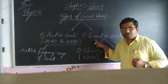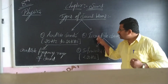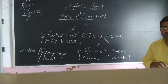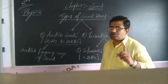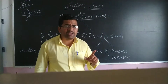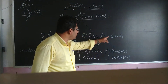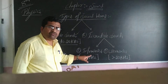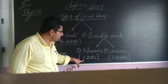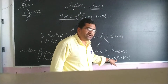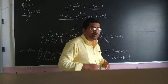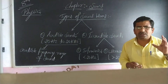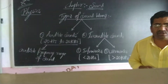Audible and inaudible — these are completely opposite words. Inaudible sound waves are the sound waves of frequency less than 20 hertz or greater than 20 kilohertz, or greater than 20,000 hertz. So those are called inaudible sound waves.